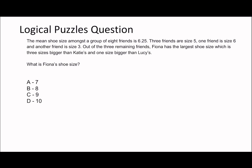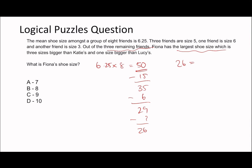The last question involves algebra. The mean shoe size among eight friends is 6.25. To find the total: 6.25 times 8 equals 50. Subtracting three friends at size five (minus 15), one friend at size six, and one at size three gives 50 − 15 − 6 − 3 = 26. The three remaining friends — Fiona, Katie, Lucy — have sizes summing to 26. Fiona is three sizes bigger than Katie and one bigger than Lucy, so: x + (x−3) + (x−1) = 26, giving 3x − 4 = 26, so x = 10. Fiona's shoe size is 10.